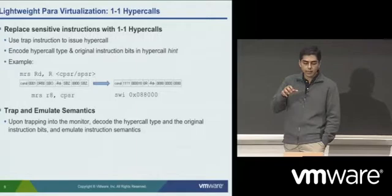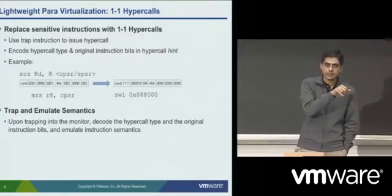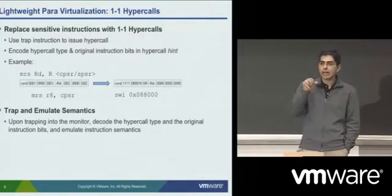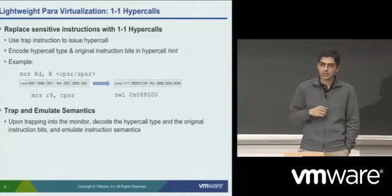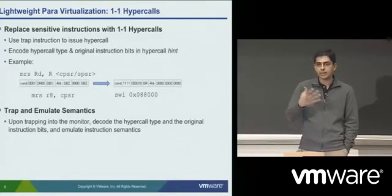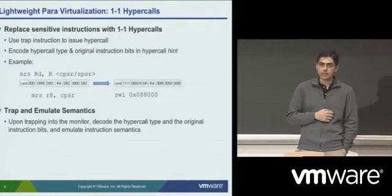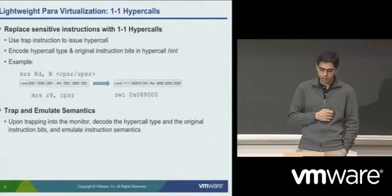You end up encoding the original instruction bits themselves as the parameter bits of the trap instruction. So when the monitor gets this trap, it's able to decode and say, OK, this was the reason I'm entering the monitor trap, and therefore I emulate the semantics appropriately.